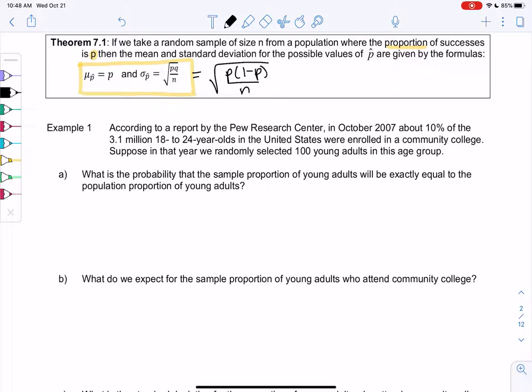According to a report by the Pew Research Center in October 2007, about 10 percent of the 3.1 million 18 to 24 year olds in the United States were enrolled in a community college. So 10 percent is my p, my proportion. Proportions are usually percents, so we just convert them to decimals, and this is a proportion from the population because we're talking about all of the 18 to 24 year olds. So p will be 0.10, and we're going to take samples of size 100. My n will be 100.